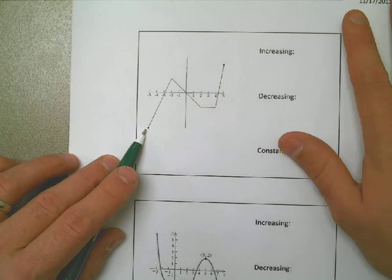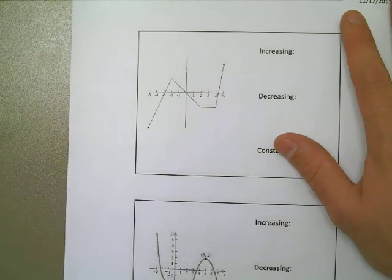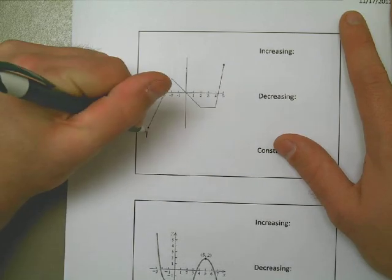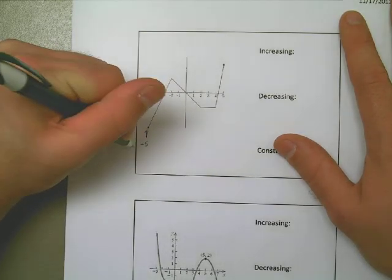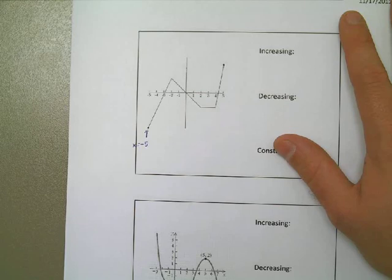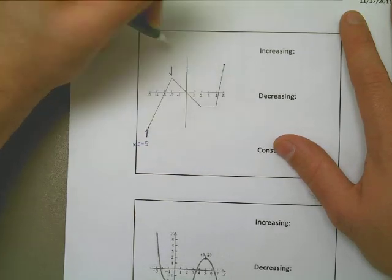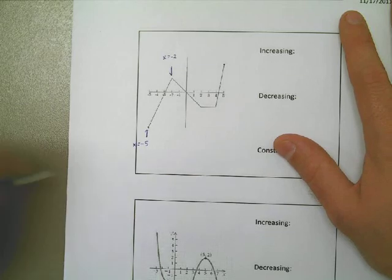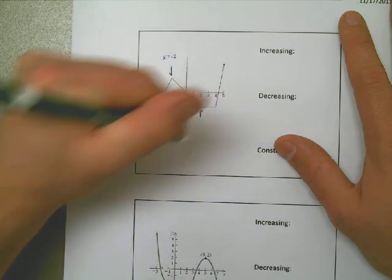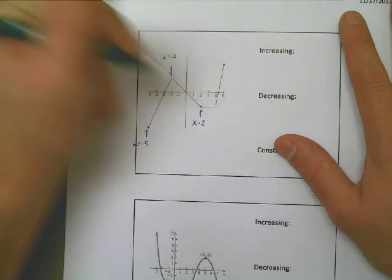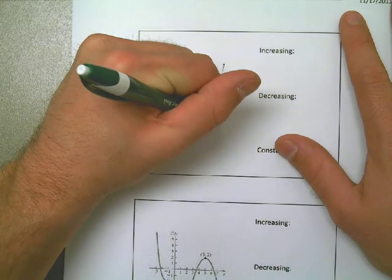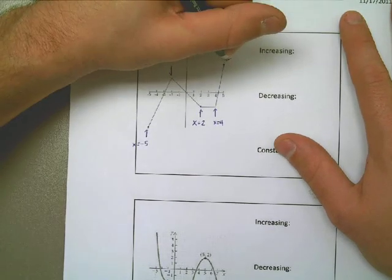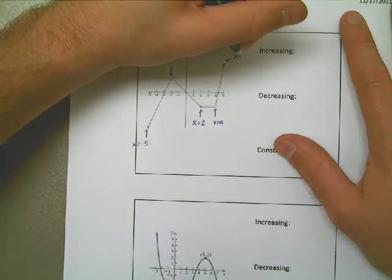What I'm going to do is take a look at these x-coordinates. I can see right here that this is at an x-coordinate of negative 5 — that's the x-coordinate at that dot. This spot right here is at an x-coordinate of negative 2. This location in the middle where it stops going down and flattens out is at an x-coordinate of positive 2. This x-coordinate here is at positive 4, and up here at the very end, this is an x-coordinate of 5.